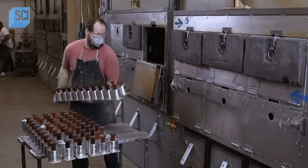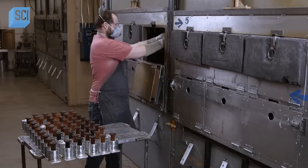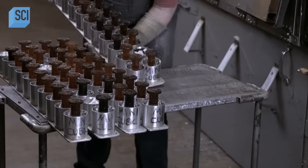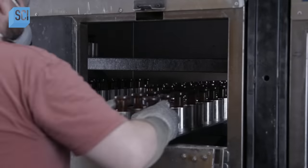To complete the process, they load the polyurethane-filled molds into an oven and bake them at 115 degrees Celsius for 40 minutes.